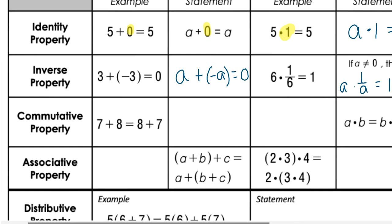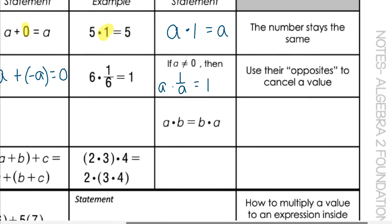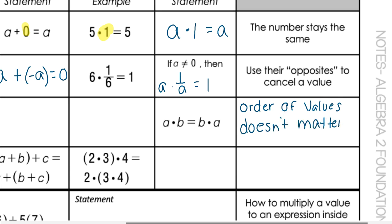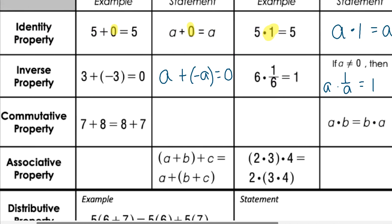The next property is the commutative property. The main idea is that the order of the values doesn't matter — we can add or multiply in any order and it doesn't change the outcome. For addition: 7 + 8 is the same as 8 + 7, or in general, a + b equals b + a. Same for multiplication: 5 times 2 is the same as 2 times 5. We can commute, we can move in either direction, and it still equals the same value.